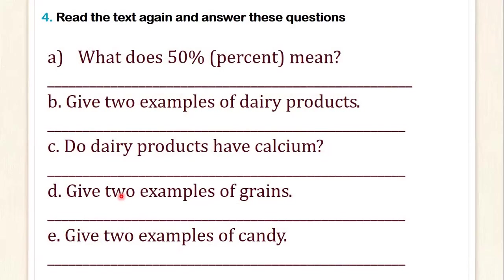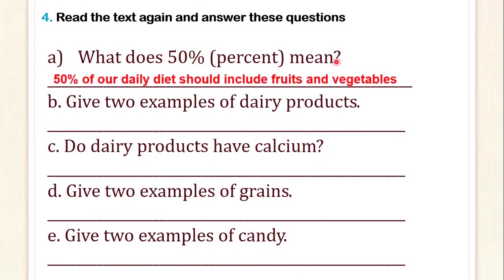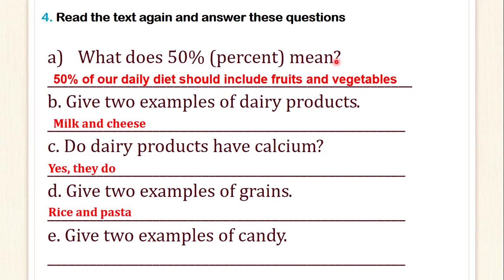Read the text again and answer these questions. Leer de nuevo el texto y responde las siguientes preguntas. A: What does 50% mean? — 50% of our daily diet should include fruits and vegetables. B: Give two examples of dairy products — milk and cheese. C: Do dairy products have calcium? Yes, they do. D: Give two examples of grains — rice and pasta. E: Give two examples of candy — chocolate or marshmallows.